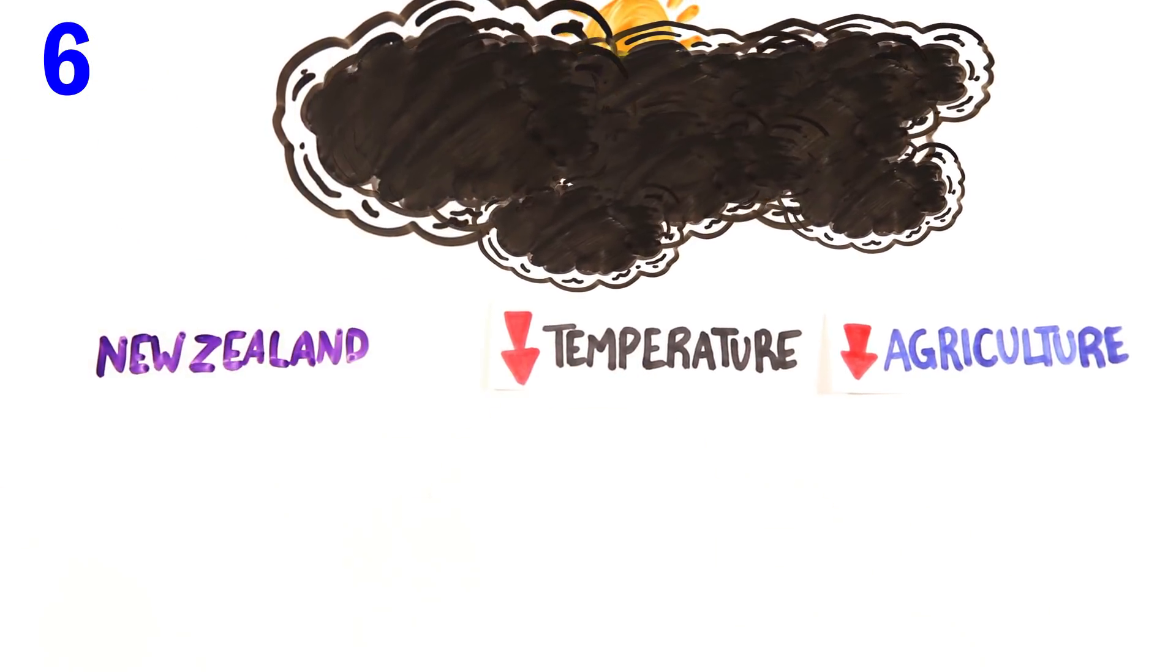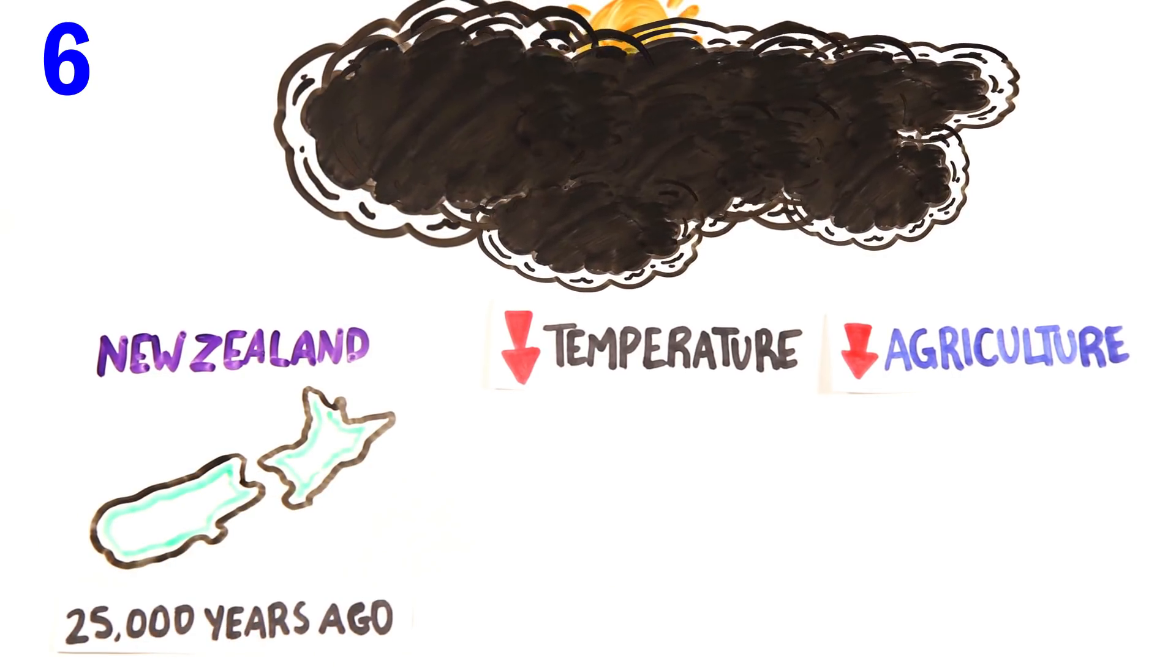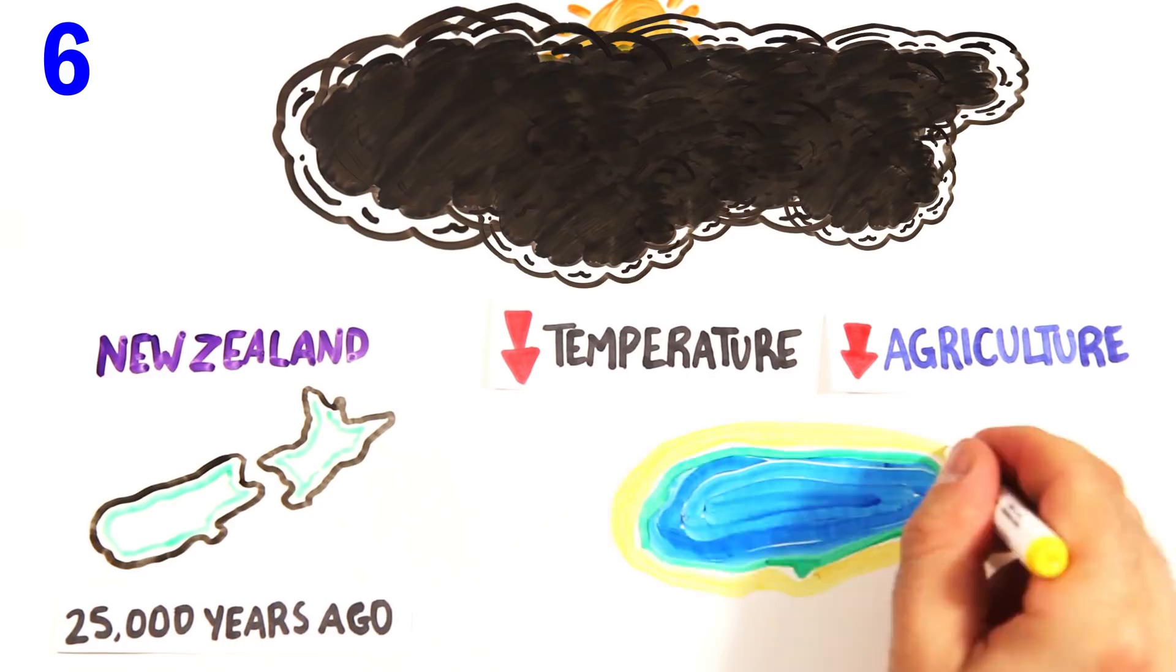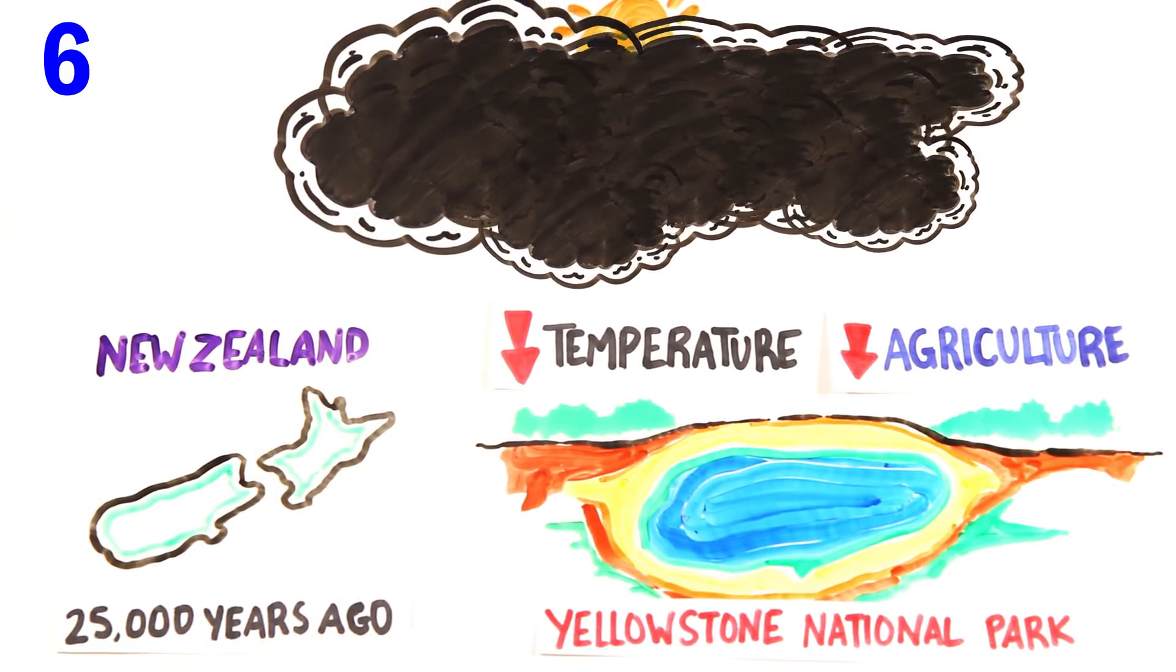The last known eruption occurred around 25,000 years ago in New Zealand, and researchers predict they occur every 30,000 to 50,000 years. Scientists are currently monitoring Yellowstone in the U.S. as a future potential site. But not all of our threats are natural.